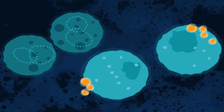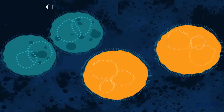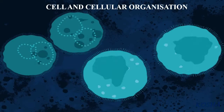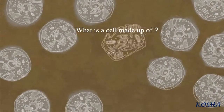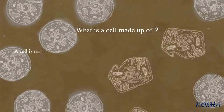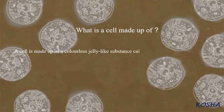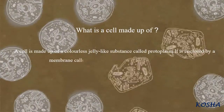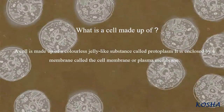Students, now we are going to learn about cell and cellular organization. What is a cell made up of? A cell is made up of a colorless jelly-like substance called protoplasm. It is enclosed by a membrane called the cell membrane or plasma membrane.